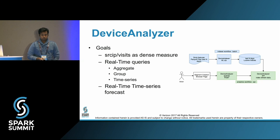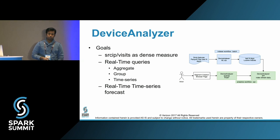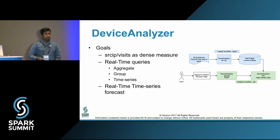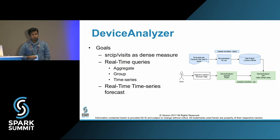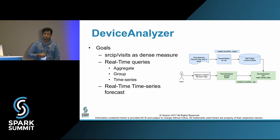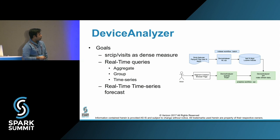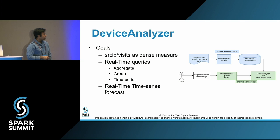Given the background of the column store feature, let me frame the problem we are trying to solve. We have something called the device analyzer. The goal is that source IP visits — either a string measure or numeric measure — require real-time queries to do aggregation, group by, and time series. On top of that, we also have to do real-time time series forecasting. To achieve that, we have two kinds of flows: an indexer workflow that is a batch flow running every day or every few hours through configuration, generating the indices.